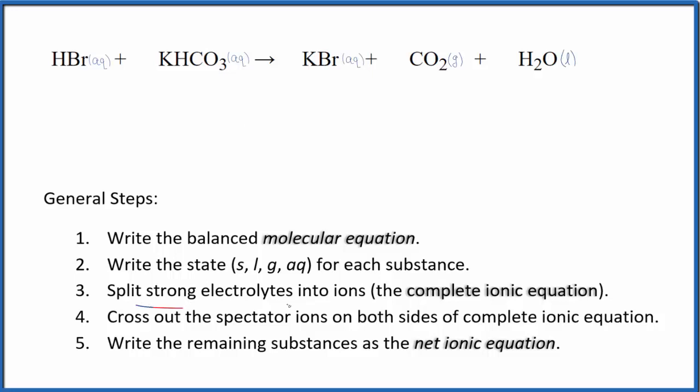Now we can split the strong electrolytes into ions to get the complete ionic equation. Hydrogen is group 1, so it's 1+, and the bromide ion is 1-. We'll have H+ plus Br-, the bromide ion.